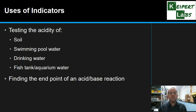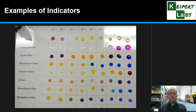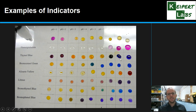We can also use indicators in a lab context to find the end point of a reaction between an acid and a base — we're going to look at that in a future video. An indicator can tell us when we've arrived at a certain level by changing colour. You can see here — the photo is a little bit glary — the names of some different indicators and the colours they produce at different levels of acidity.